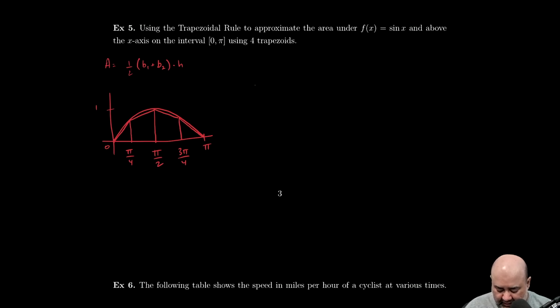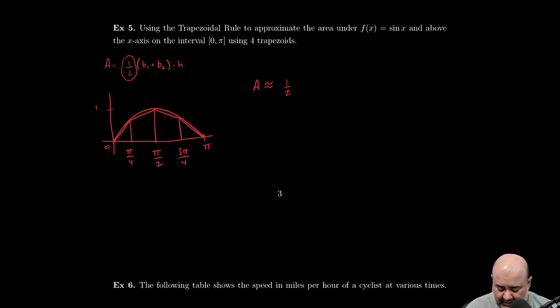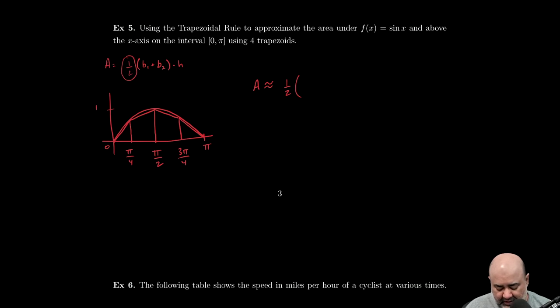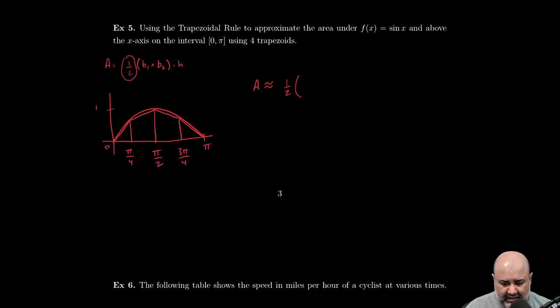So my area, using trapezoidal approximation, will be approximately one-half. Now, this one-half is common to all of them. The base one and the base two are going to change, and then the height is going to change based on what the sine value is. So the one-half can be factored out, and now you have base one plus base two times the height, base one plus base two times the height, base one plus base two times the height.